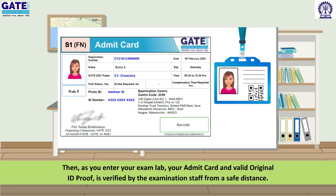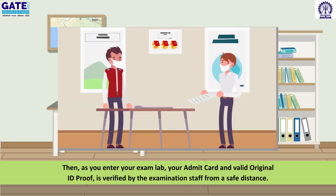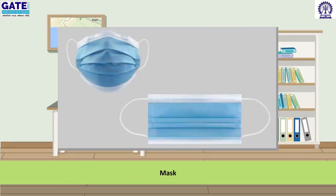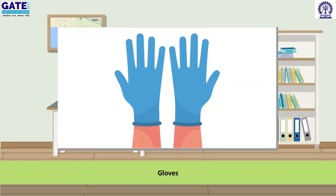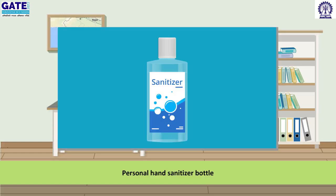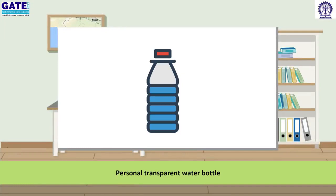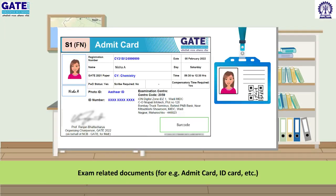As you enter your exam lab, your admit card and valid original ID proof is verified by the examination staff from a safe distance. You are only allowed to carry the following belongings inside the exam lab: mask, gloves, personal hand sanitizer bottle, a simple pen and/or pencil, personal transparent water bottle, exam-related documents such as admit card, ID card, etc.